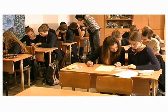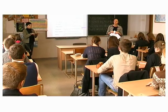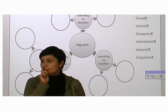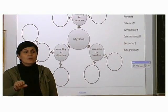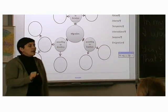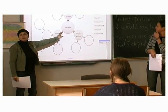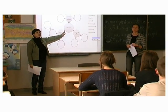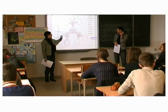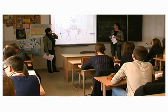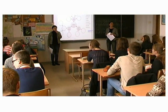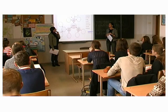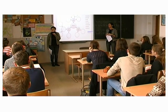The next sheet of paper that we have is a diagram — you see with these bubbles? You have migration at the very center of the diagram, and we are going to divide migration into different kinds.